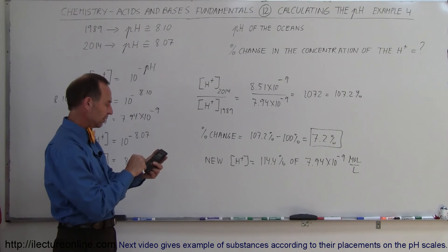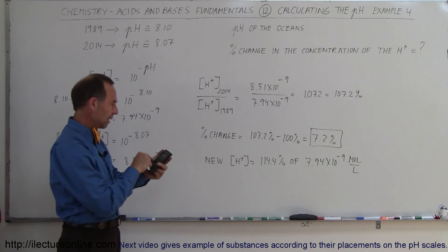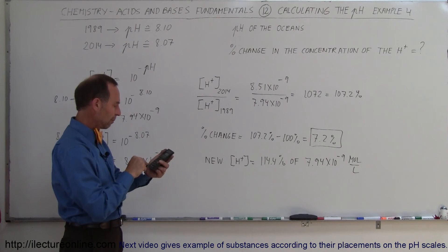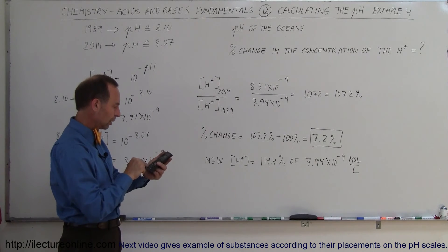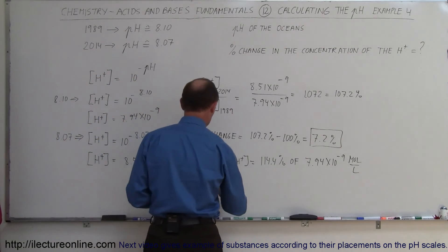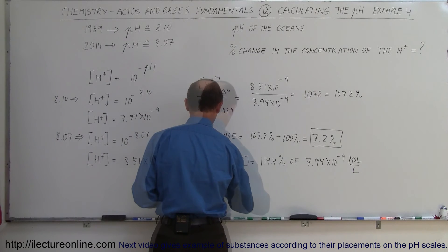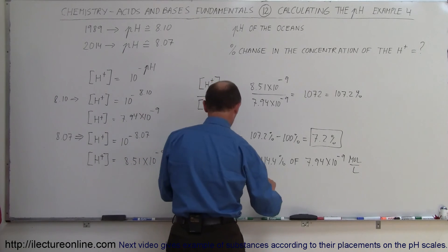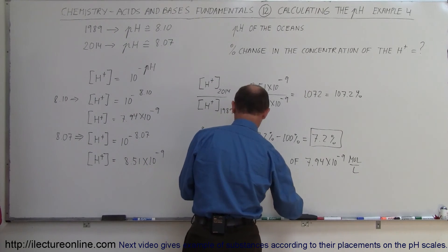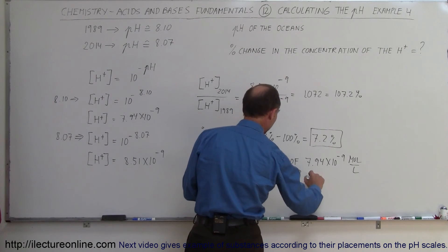So 7.94 e to the 9 minus times 1.144 equals, so that would give us a new concentration equal to 9.08 times 10 to the minus 8 moles per liter.